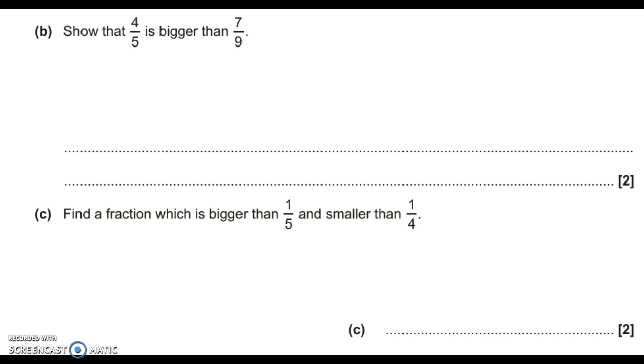So to make it out of 45, that first fraction needs to be completely multiplied by 9. So I'm going to end up with 36 over 45.